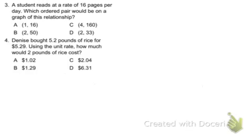You're at two study guide problems, 3 and 4. A student reads at a rate of 16 pages per day. Which ordered pair would be on the graph? Which ordered pair would be on the graph?